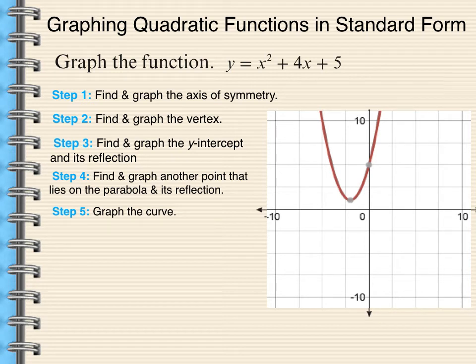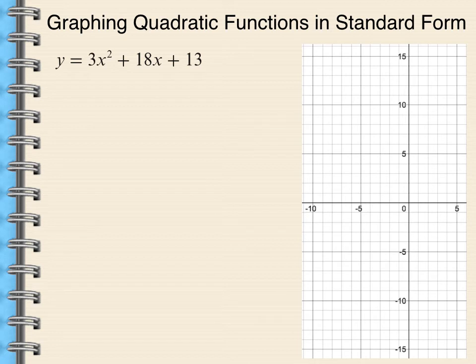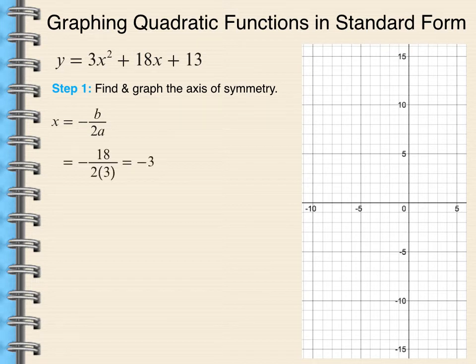So now we're going to look at another function, but this one has a leading coefficient that is not 1. So therefore, it's not going to be the typical wideness of the parent function. But same step, we're going to find and graph the axis of symmetry first. We use x equals negative b over 2a. That's the opposite of 18 over 2 times 3. So x equals negative 3 is my axis of symmetry, which I plotted.